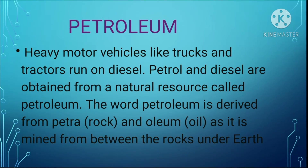What is petroleum? Heavy motor vehicles like trucks and tractors run on diesel. Petrol and diesel are obtained from a natural resource called petroleum. The word petroleum is derived from 'petra' meaning rock and 'oleum' meaning oil, because it is mined from between rocks under the earth. So petrol and diesel come from petroleum, and that is why it is named petroleum — derived from petra and oleum.